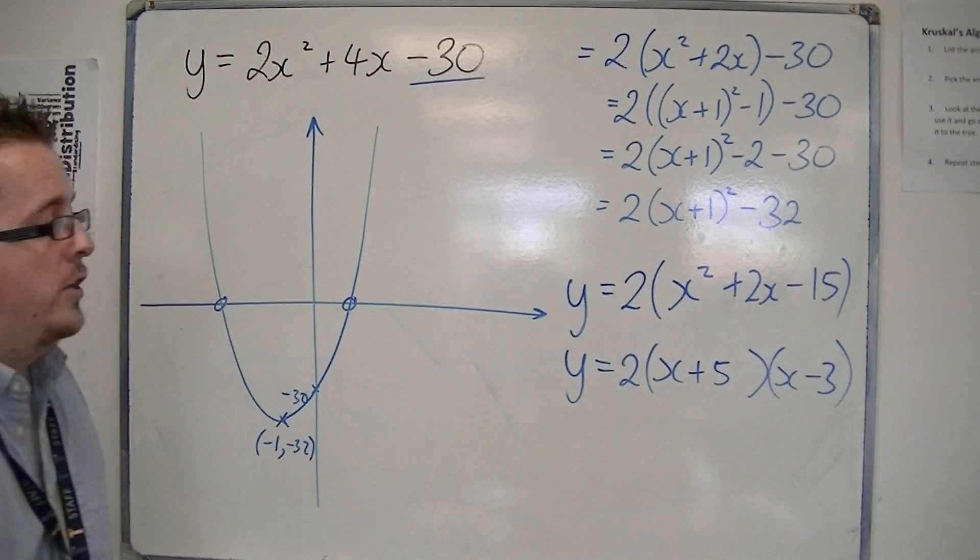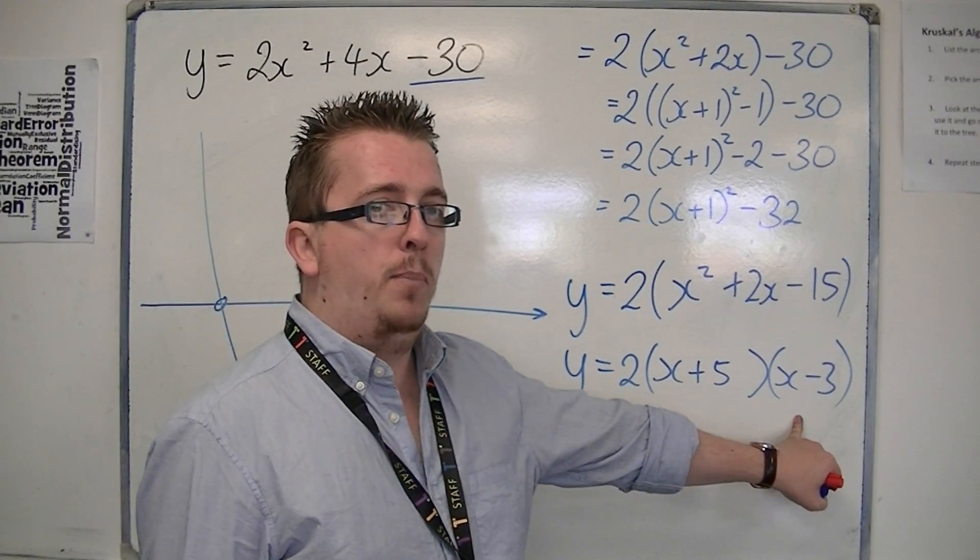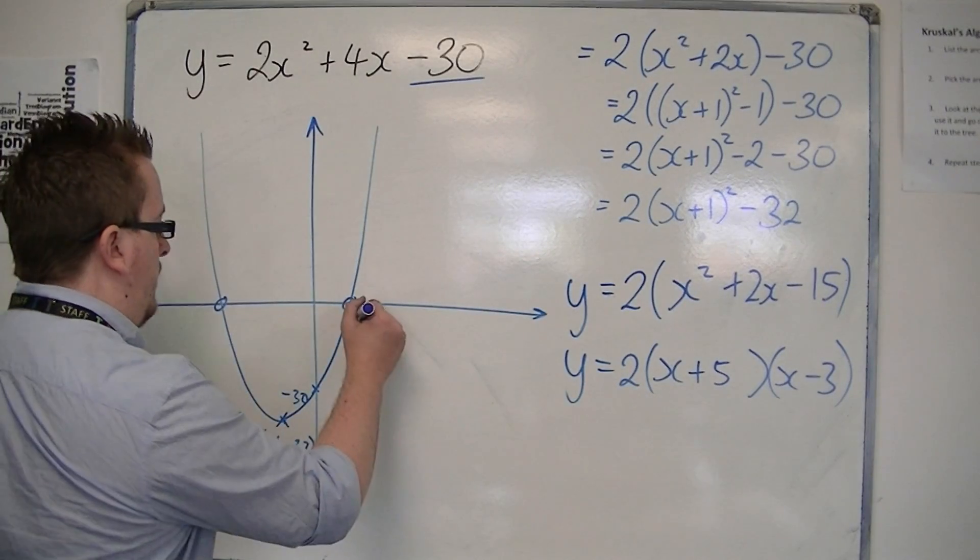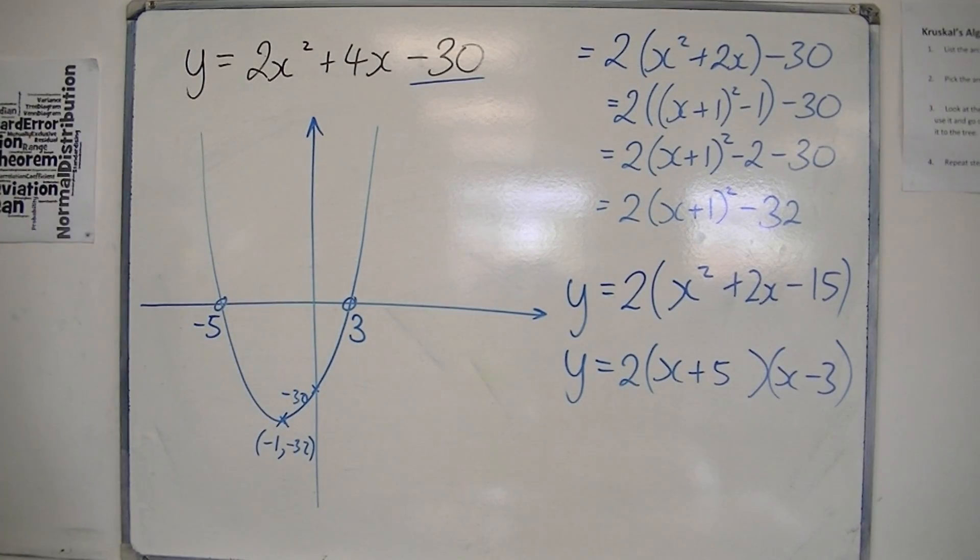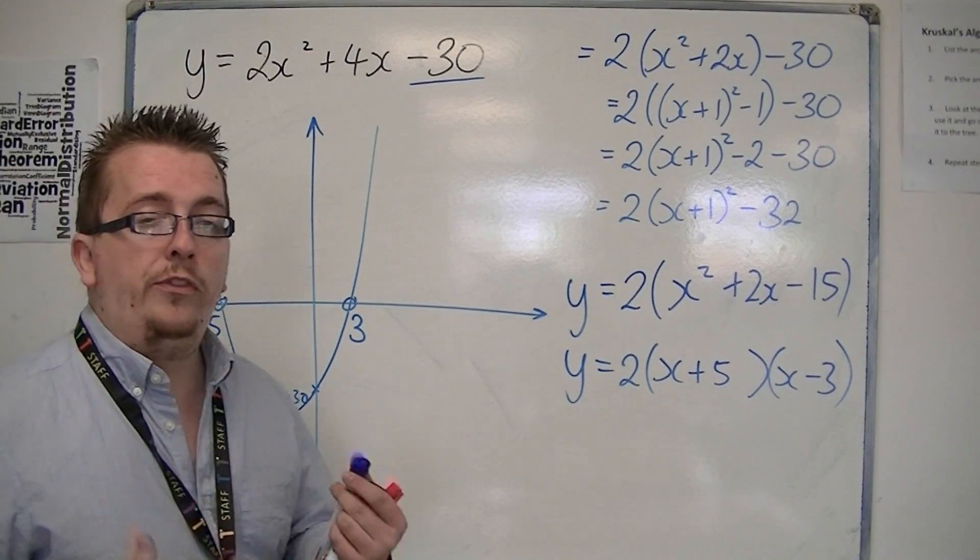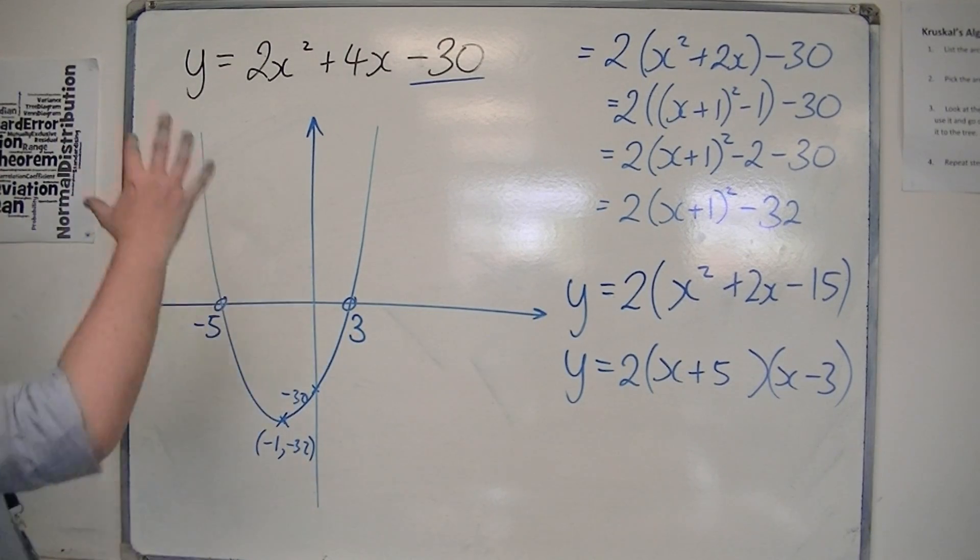So we know that it crosses the x-axis at minus 5 and positive 3. So that's positive 3, and that's minus 5. So that is how we can use the skills that we've learnt in order to completely sketch a curve, to go from its quadratic equation to what it would look like on the graph.